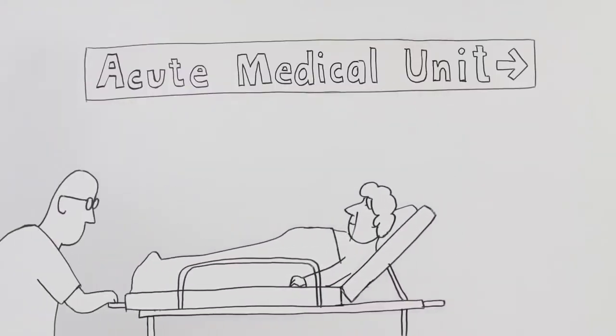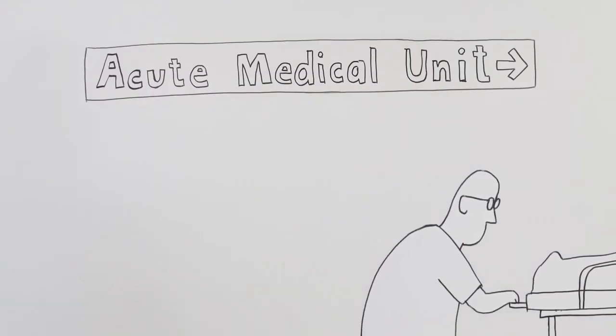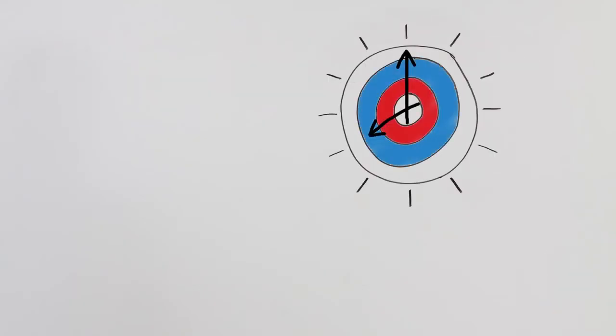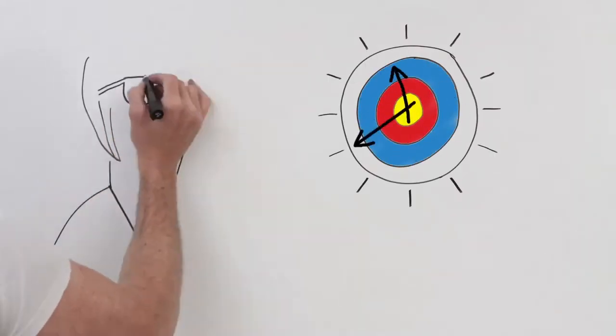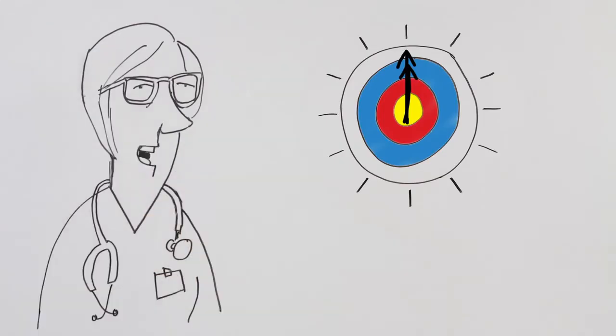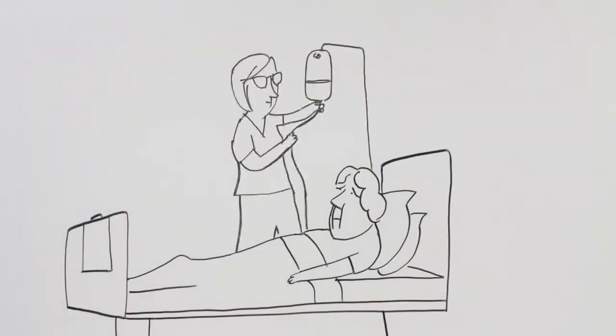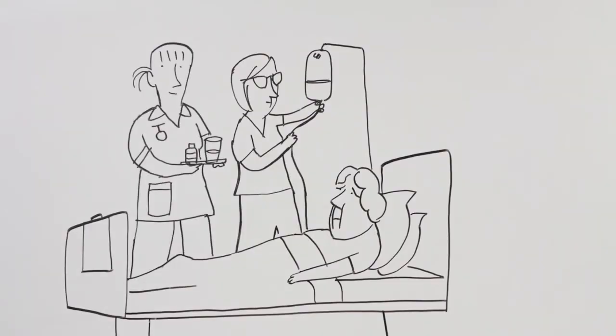Mrs Andrews was moved on to the acute medical unit. She was getting close to breaching the four-hour target. It was also getting late and the AMU was a safer place to assess her and get her back on her feet. We put up a drip and gave her some antibiotic tablets for the urine infection.